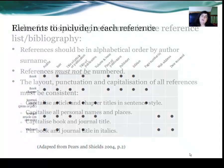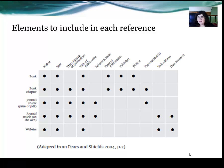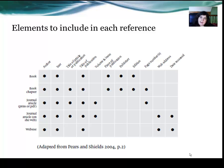The next slide has been taken directly from Cite Right, adapted from Peers and Shields, 2004, page 2 — it shows elements to include in a reference. On the X axis you have: author, year, title of publication or article, title of publication, volume and issue, place of publication, publisher, edition, page number, web address, and date accessed. For a journal article, you must include: the author, the year, the title of article, the title of publication, the volume and issue, and the page number.